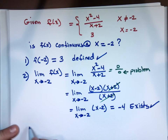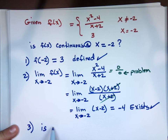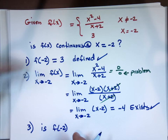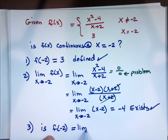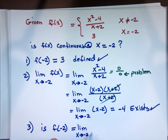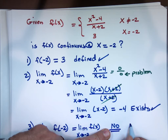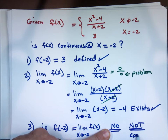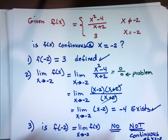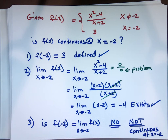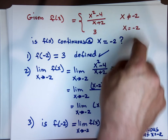The last test for continuity: does f(-2), which is 3, equal the limit we found, which is -4? No. The test failed — the function is not continuous at x = -2. All three conditions have to be yes, yes, and yes to be continuous at that point. Usually the problem won't tell you where to test, so you have to look at the function and identify those critical points yourself.